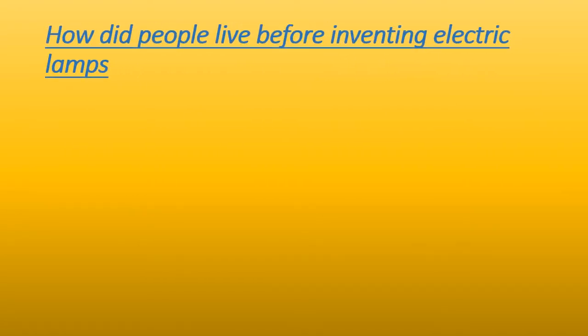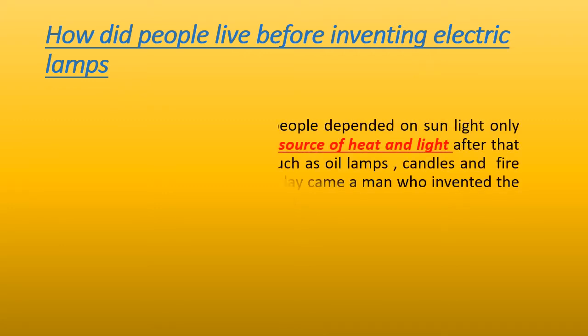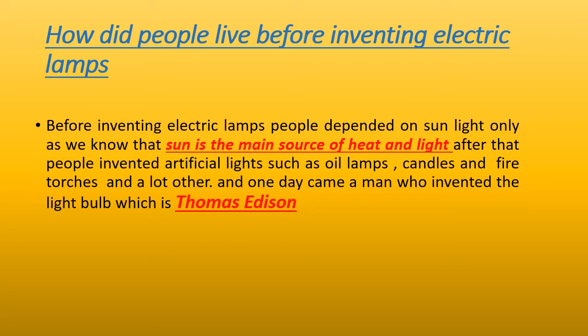First, how did people light before inventing electric lamps? The people depended on the sunlight only, so the sun is the main source of heat and light. After the invention of artificial lights like oil lamps, candles and fire torches, Thomas Edison invented the light bulb.